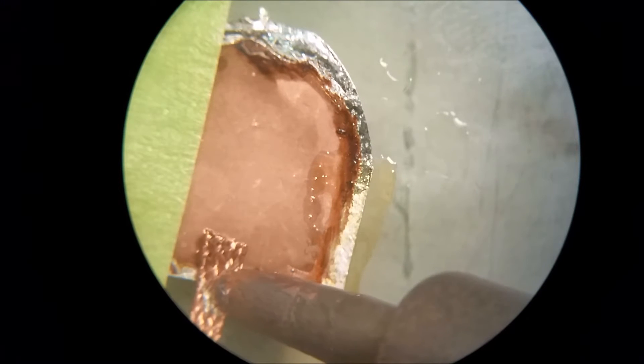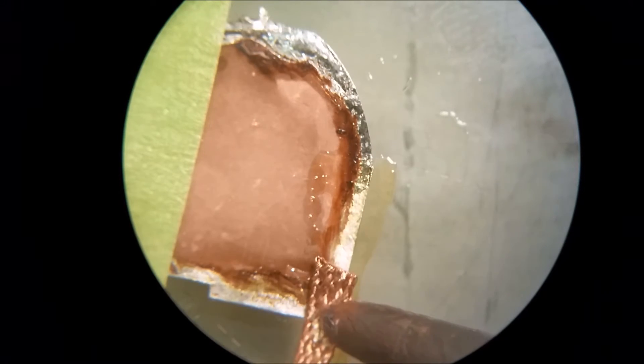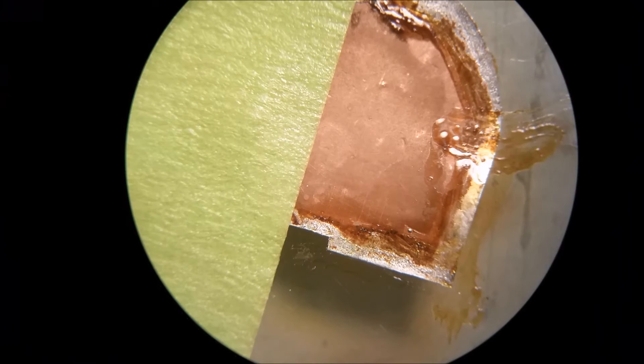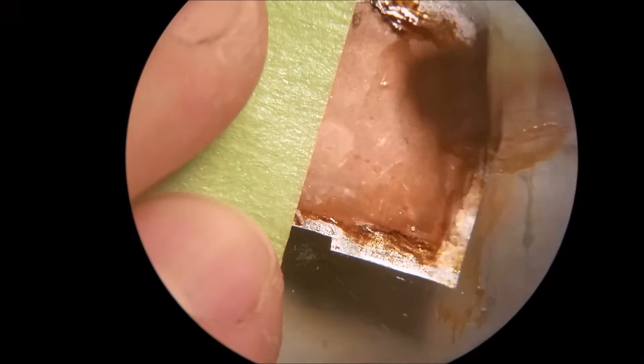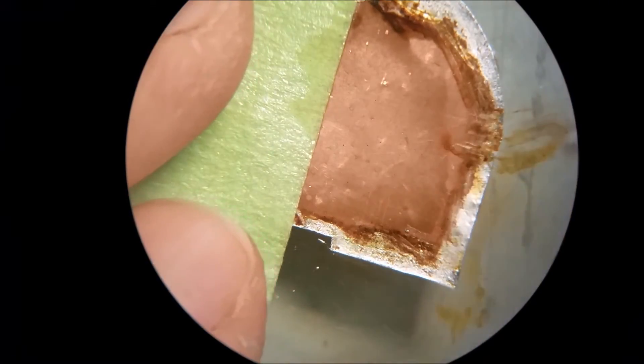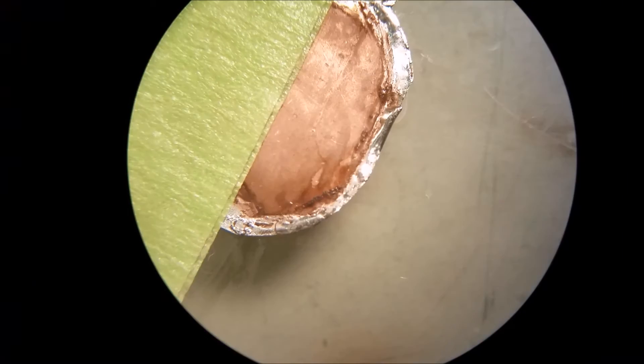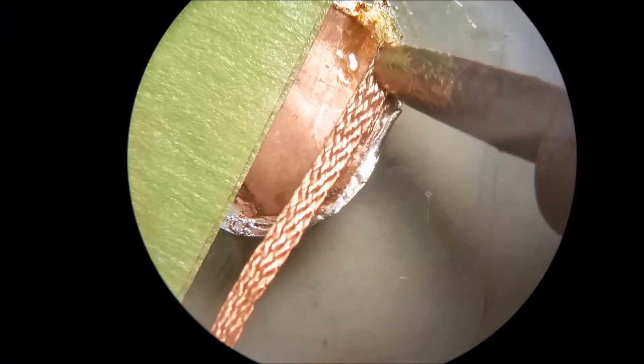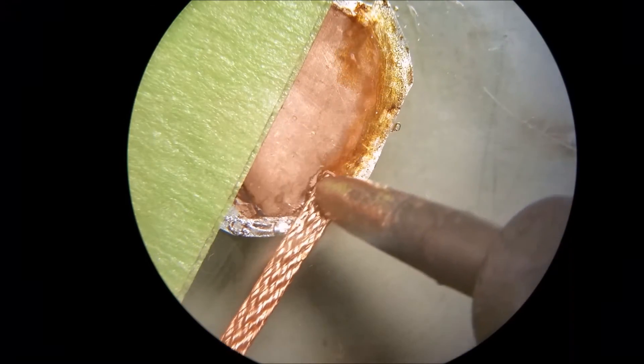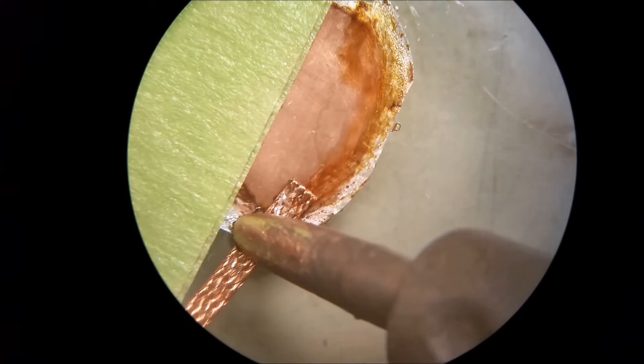When you get that done, then get your alcohol and clean it off. After you clean it off, turn it around, put the tape on this side, and do the other side. Now I'm doing the other side and you want all the excess solder off of it so it lays flat on the board.